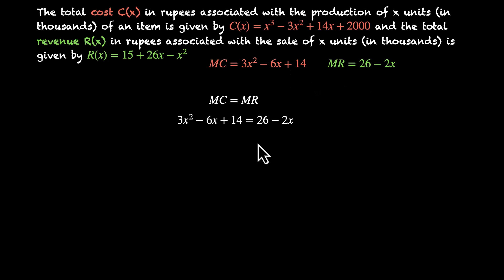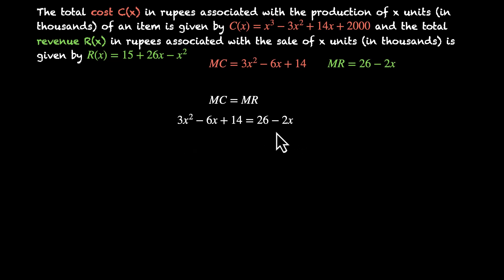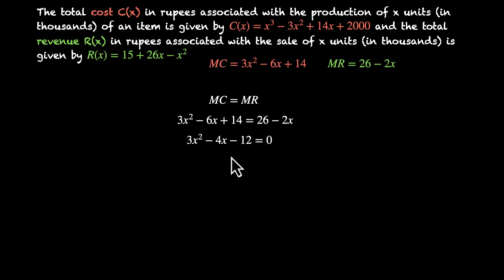We equate the two expressions: 3x² - 6x + 14 = 26 - 2x. Rearranging: 3x² - 4x - 12 = 0. We now need to solve this quadratic equation.